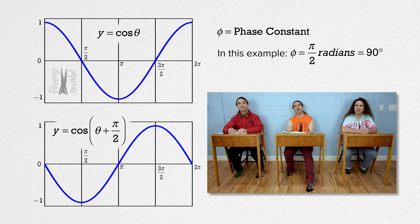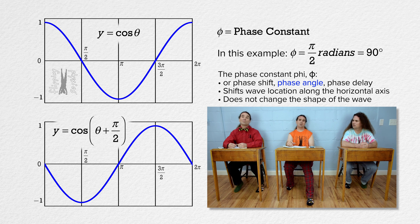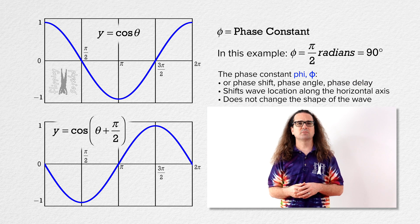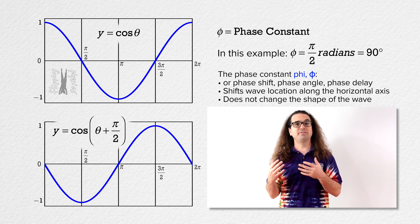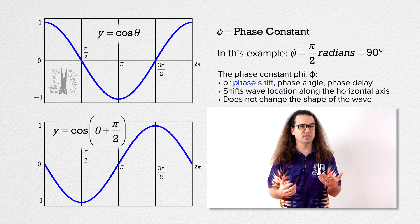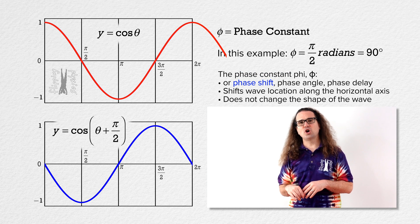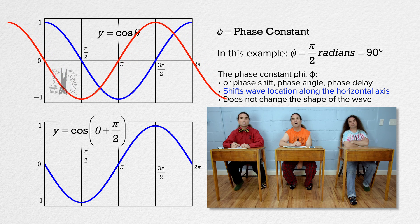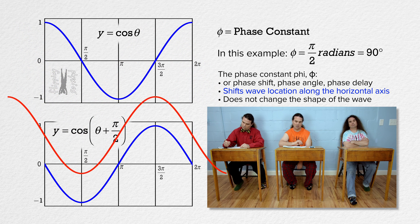I thought phi was the phase angle. I've heard it is called phase delay. Yeah, phi has a lot of names. Most often I have heard it called phase constant or phase shift. The most important thing to know is that it shifts the sine or cosine wave along the horizontal axis. However, it does not change the shape of the wave.